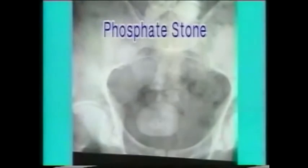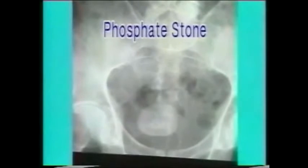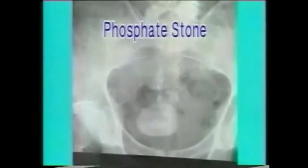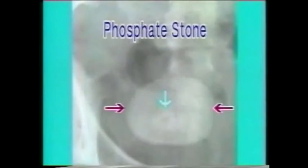This is a phosphate stone. Note the typical smooth and lamellated appearance of phosphate stones. They form in infected urine and are deposited layer by layer, hence they have a lamellated appearance.